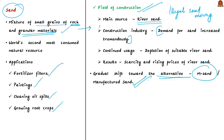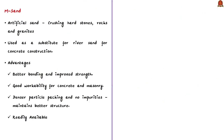M-Sand stands for Manufactured Sand — it is an artificial sand produced by crushing hard stones, rocks, and granites into small sand-sized angular-shaped particles, used as a substitute for river sand in concrete construction. The actual required properties of sand are obtained in M-Sand as well, and its manufacturing process is synonymous with the natural process undergone by river sand.